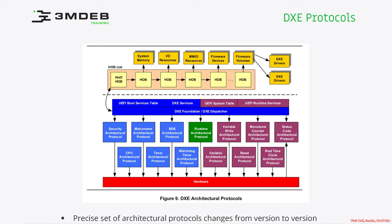You can also see the HOB list and how the HOB list typically looks. There is a PHIT HOB, which is just a dummy HOB saying that this is the beginning of the HOB list, and then there is a linked list of HOBs. As we said, what's inside the HOB is not precisely defined — the format of data is not defined. There is just a rough structure and the exact content is up to the implementation.